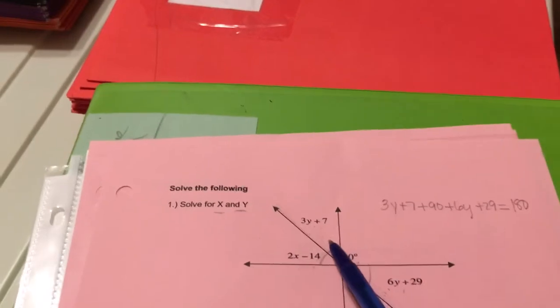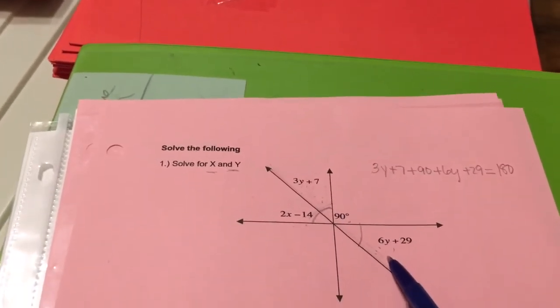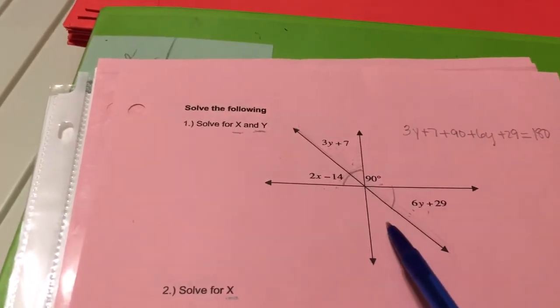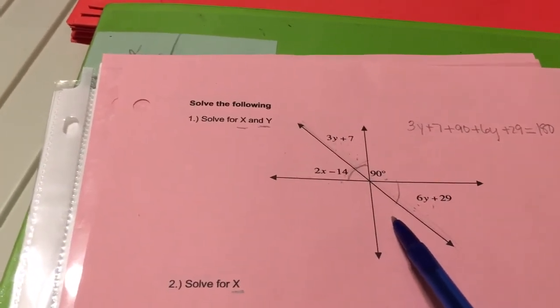I said that this angle and this angle were vertical angles. That is not true. This angle here and this angle here would be vertical angles.